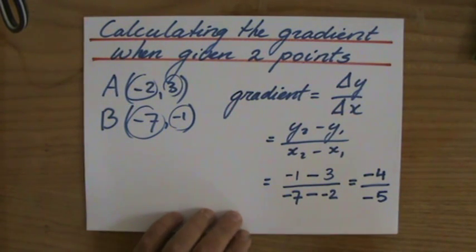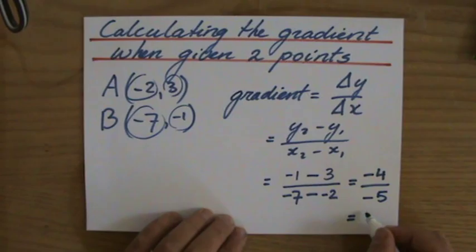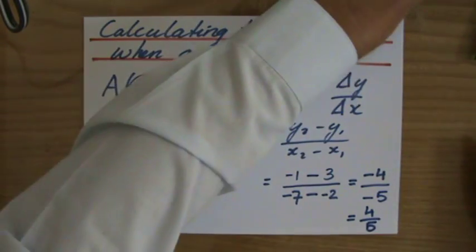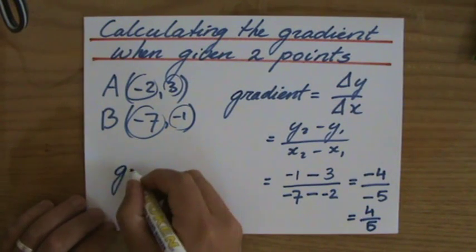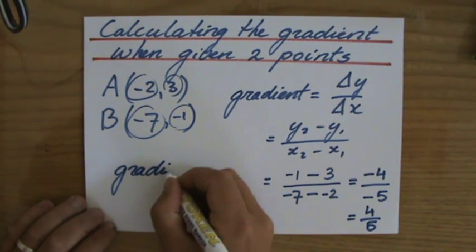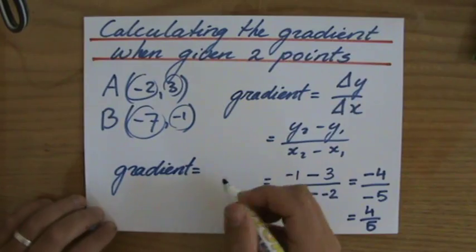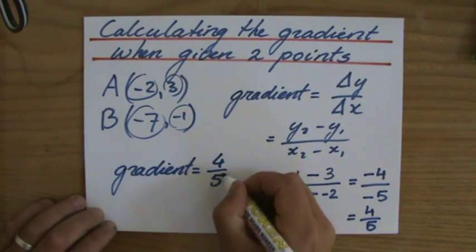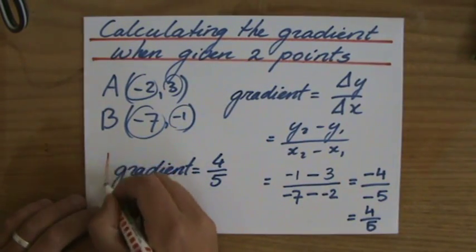And minus 4 divided by minus 5 is actually 4 over 5. That is a 5. 4 over 5. Let me rewrite it here. So the gradient of the line going through point A and point B is 4 over 5.